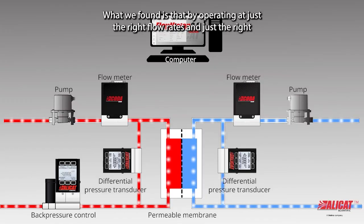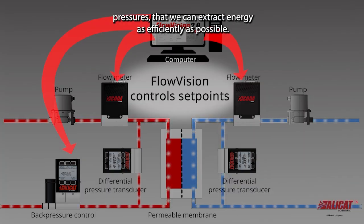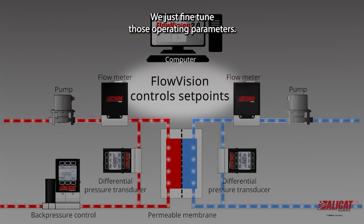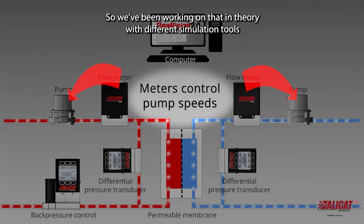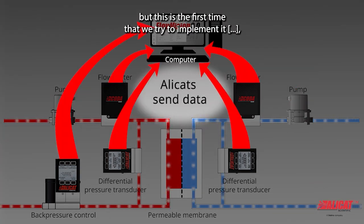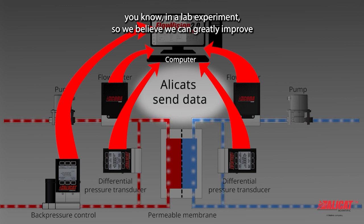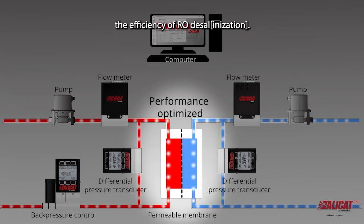What we found is that by operating at just the right flow rates and just the right pressures we can extract energy as efficiently as possible if we fine-tune those operating parameters. We've been working on that in theory with different simulation tools, but this is the first time we try to implement it. In lab experiments we believe we can greatly improve the efficiency of the system.